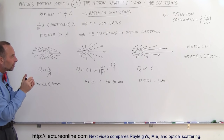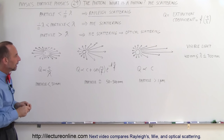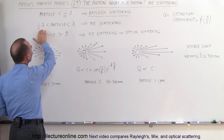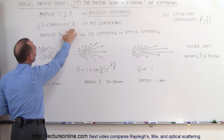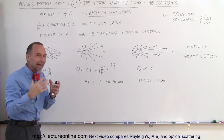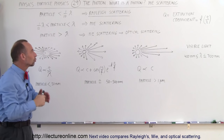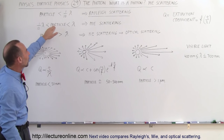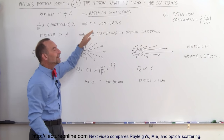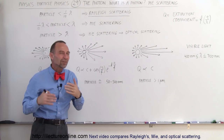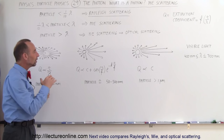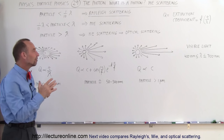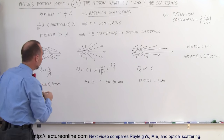As the particle gets bigger and now reaches a size somewhere between one-tenth to a full wavelength — so the diameter of the particle is roughly the size of a wavelength — then we go into what we call Mie scattering. What is different about Mie scattering? It turns out that the amount of scattering from the particle depends upon the direction.